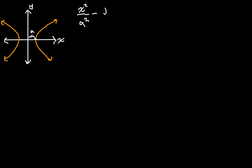Then we're subtracting y squared over b squared. Now it's a horizontal hyperbola — it doesn't touch the y-axis. Notice if we made x equal to zero, which would be on the y-axis, we'd get an undefined term because this is all equal to one. And b would be about here on the y-axis. A is always the one that actually touches the hyperbola, whereas b is the other point which helps to find the asymptotes.